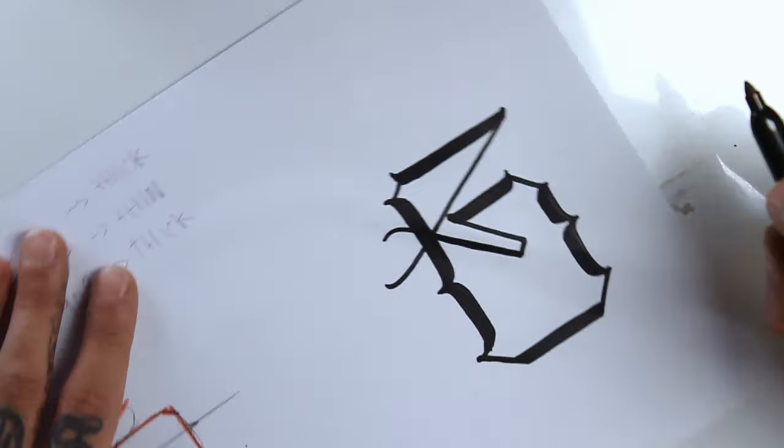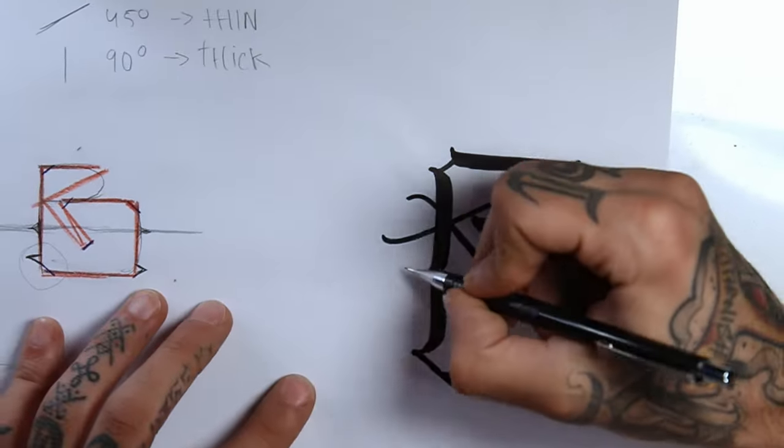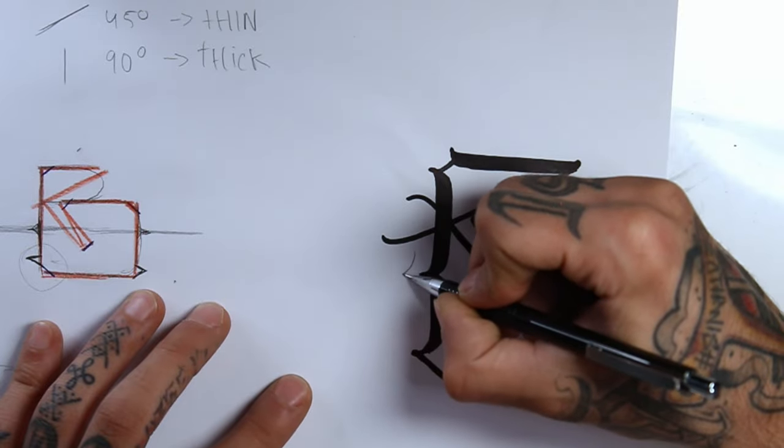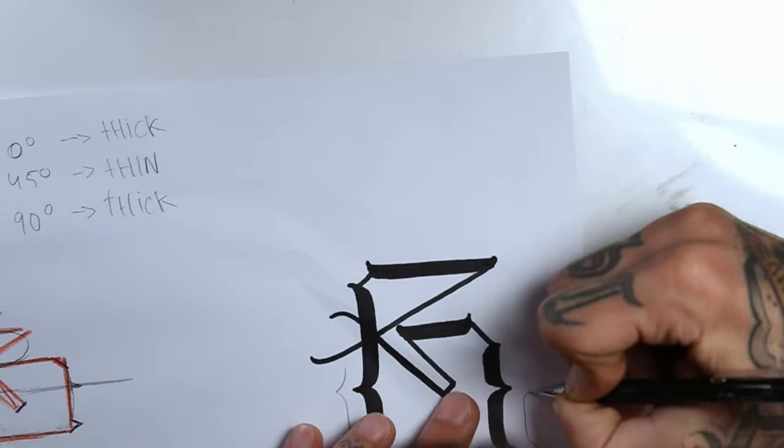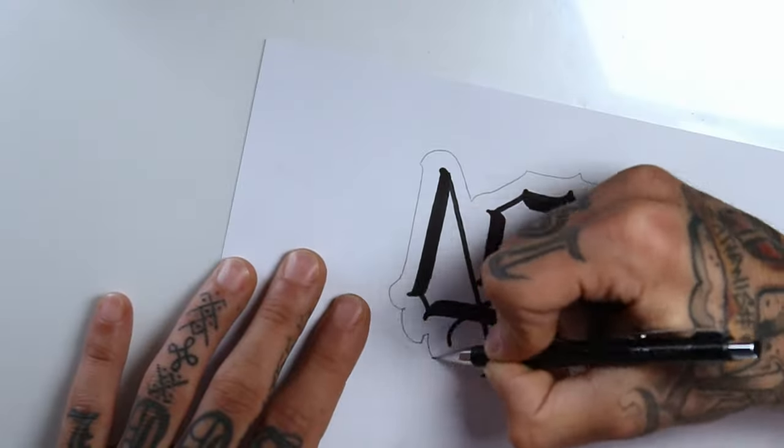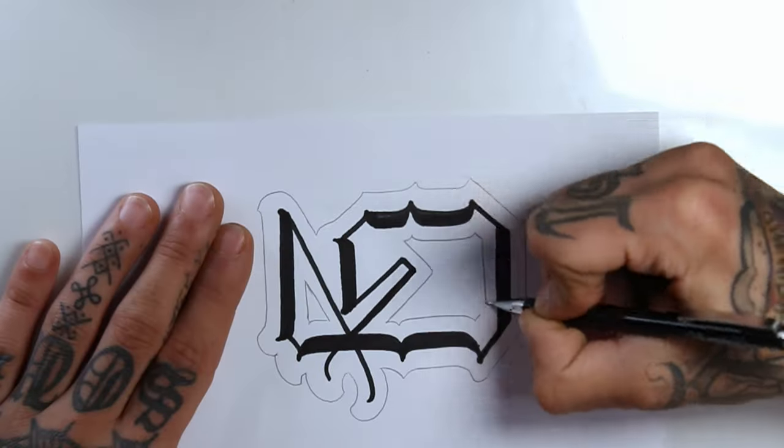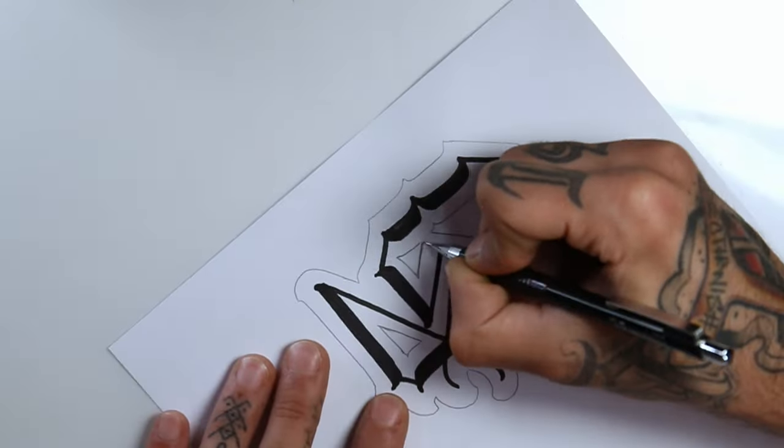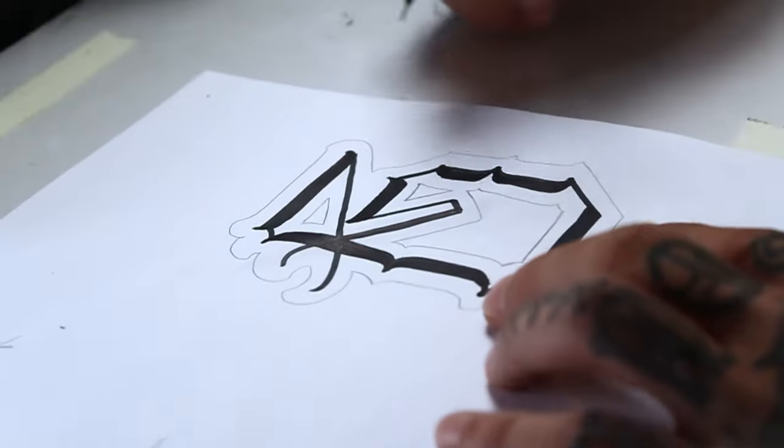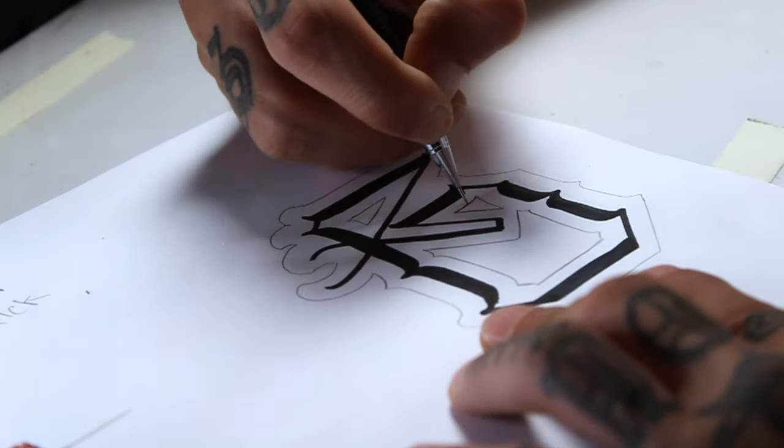And now I get back to the Micron 0.5 technical pencil and I'm going to do an outer line, leaving some space around the letter that will bring it all together. On the down facing parts of the outer line, I make the line thicker and stronger.